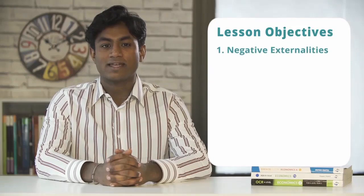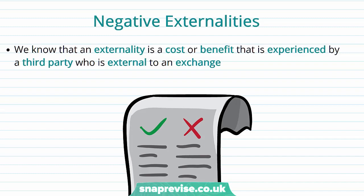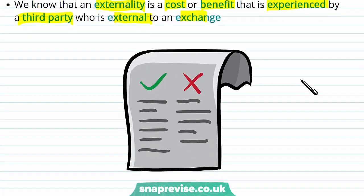In this video we'll be looking at negative externalities and then finishing off with a summary. An externality is a cost or benefit that is experienced by a third party who is external to an exchange. We call it an externality precisely because someone outside of the exchange of goods or services is experiencing some kind of cost or benefit.